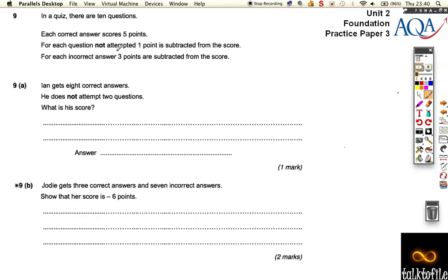So Ian gets eight correct answers and he does not attempt two questions. What is his score? Well, eight times five points, because that's how much you get for each correct one, is worth 40 points. But there was two he did not attempt, so you get two lots of minus one point, means he's lost a total of two points. So when you combine that together he has a total of 38.